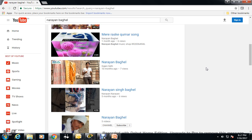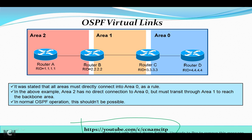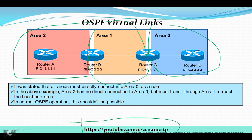Now we will go through OSPF virtual links. First of all, we want to know what is the use of virtual links in OSPF. I have taken a small example with four routers divided into three areas: Area 0, Area 1, and Area 2, colored in three different colors. Two interfaces of two routers are in Area 0, one port each of two routers is in Area 1, and one port each of two routers is in Area 2.